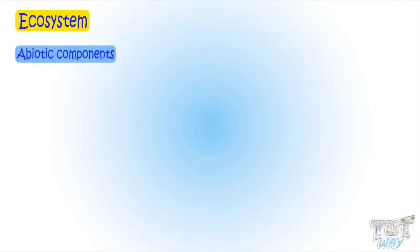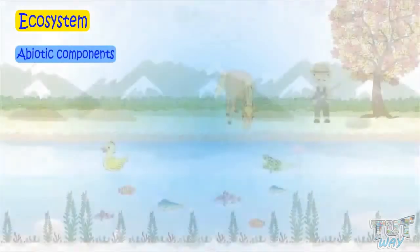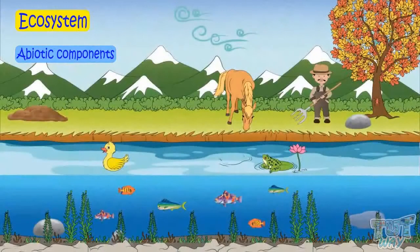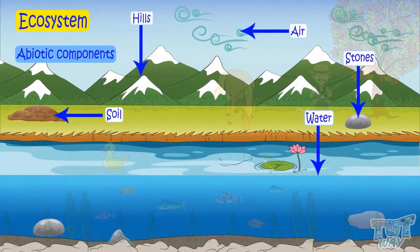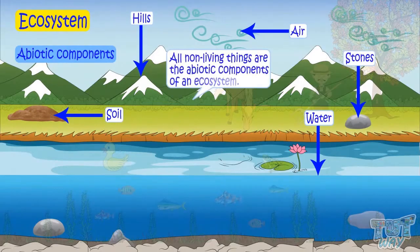Abiotic components: Water, air, soil, stones, hills — all non-living things are abiotic components of an ecosystem.